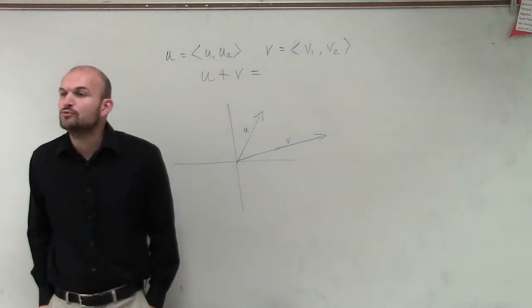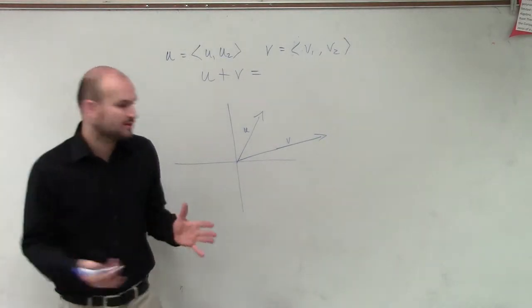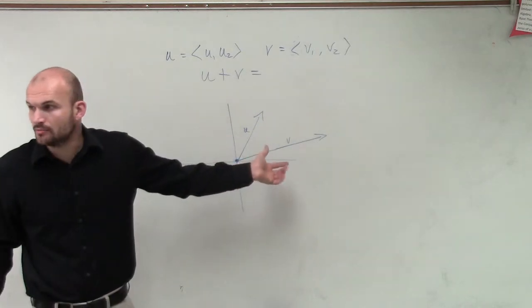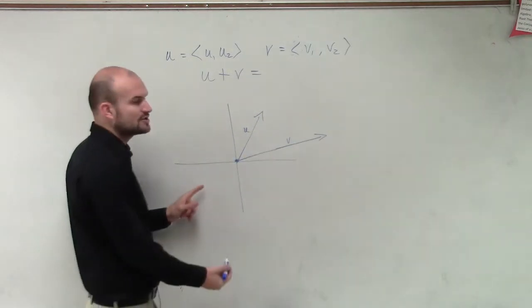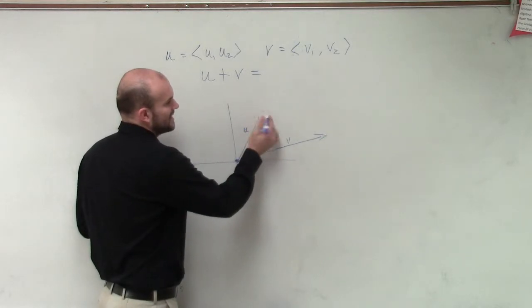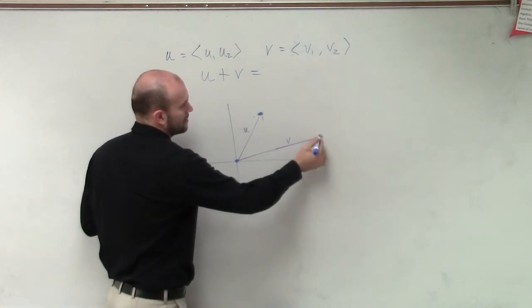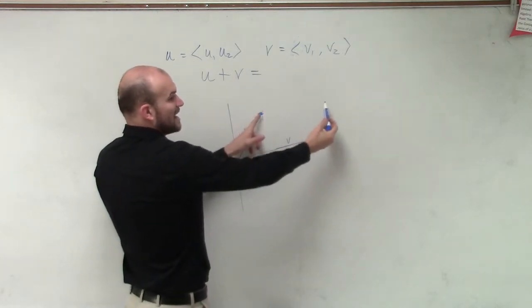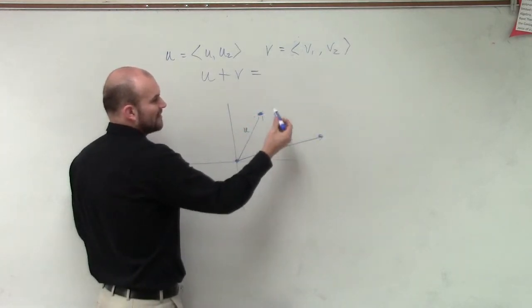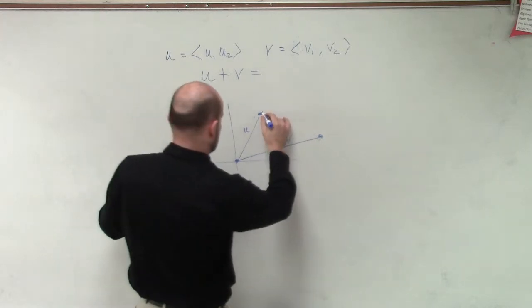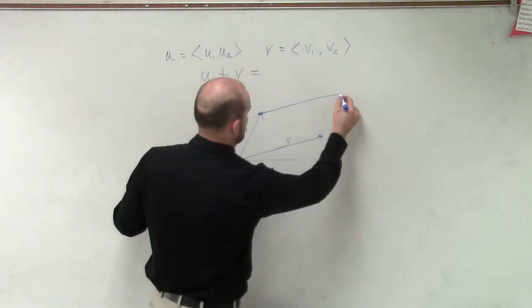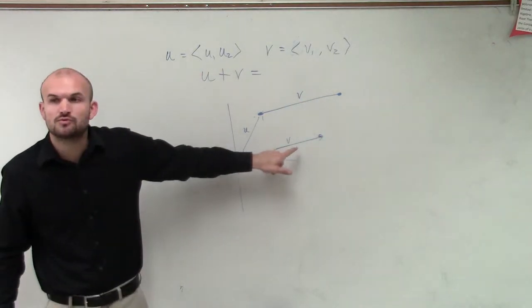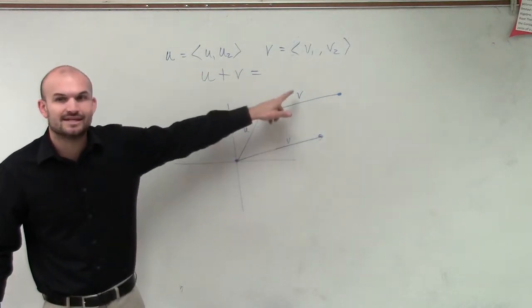If I want to find u plus v, these are two component forms of vectors. All you're going to do is take your initial point, and we're going to transpose our v at the end of our other vector. So we're going to transpose one vector at the end of the other vector.